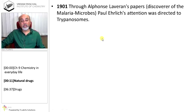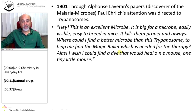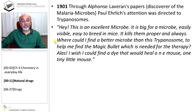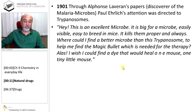In 1901, through Alphonse Laveran's papers about malaria microbes and trypanosomes, Paul Ehrlich's attention was directed towards trypanosomes. His exclamation: 'This is an excellent microbe — it is big for a microbe, easily visible, easy to breed in mice, it kills them properly and always. Where could I find a better microbe than this trypanosome to help me find the magic bullet needed for therapy? I wish I could find a dye that would heal one mouse, one tiny little mouse.'